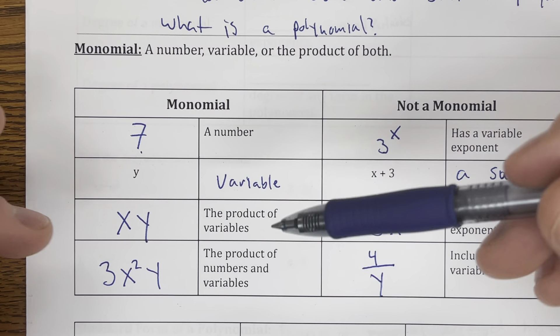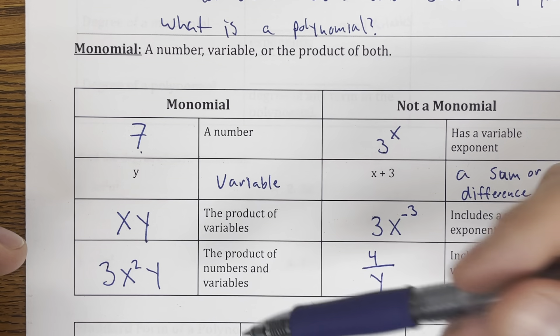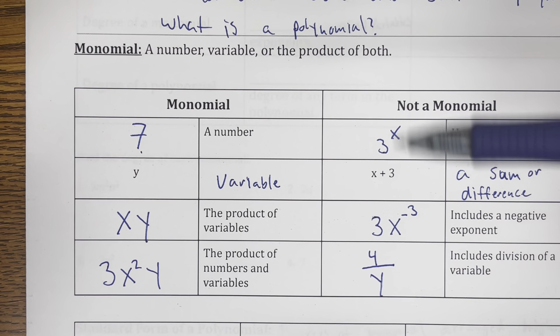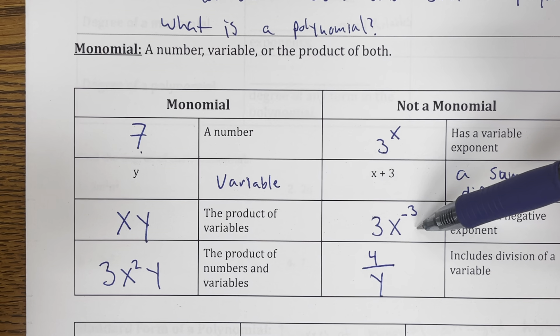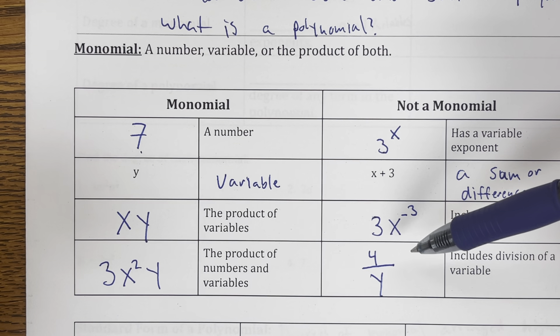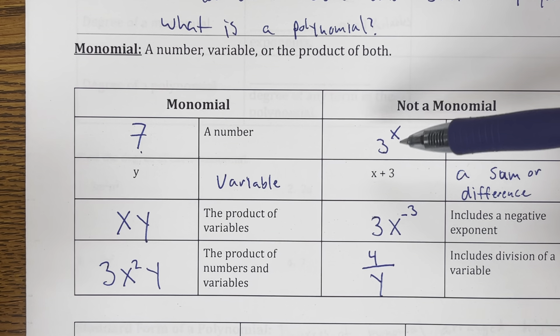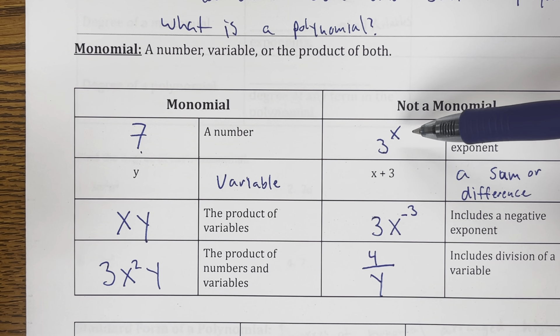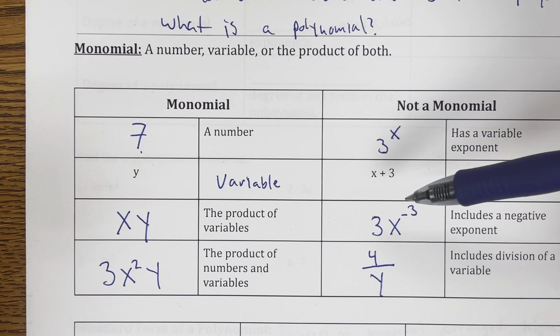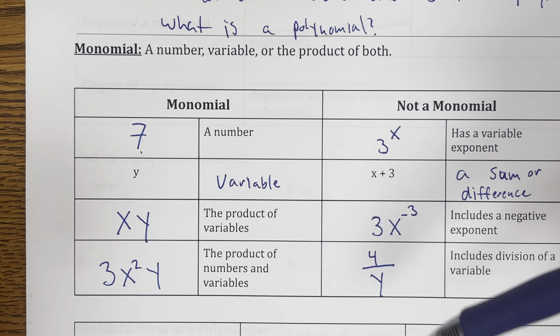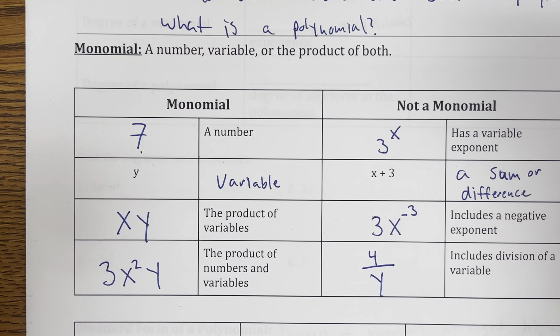In summary, when identifying a monomial: we can have variables and numbers, we can have exponents, but we cannot have negative exponents, we cannot have variable exponents, and we cannot have a variable in the denominator.